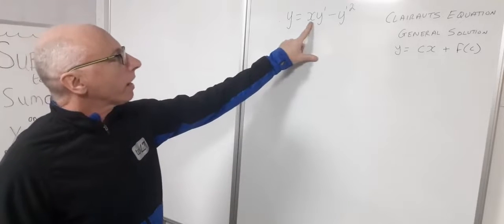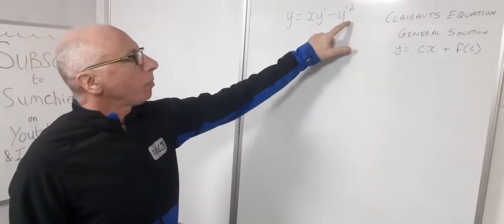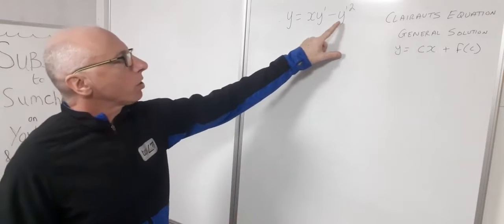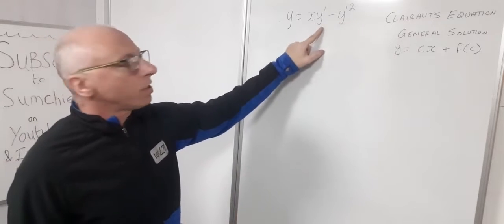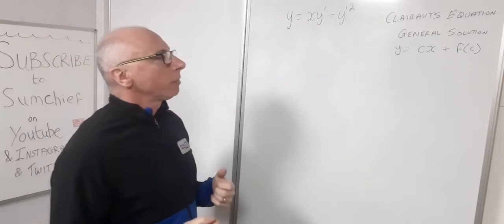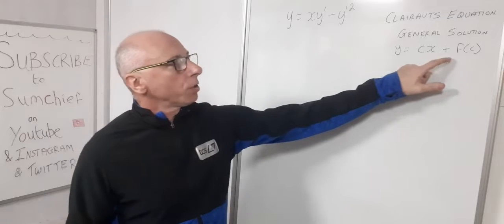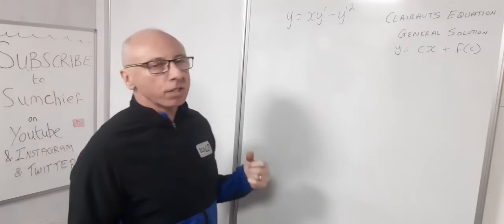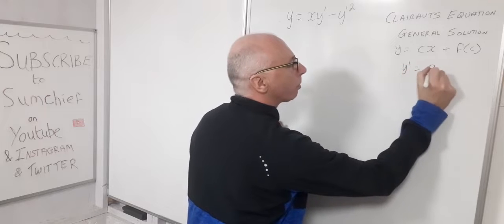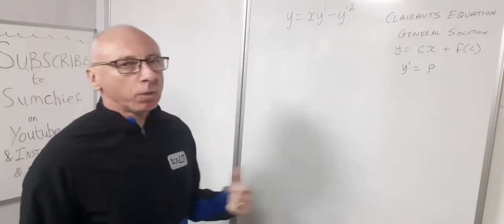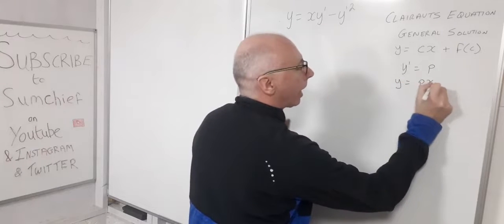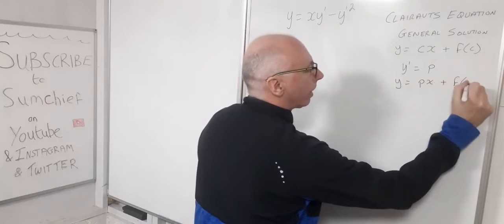So here we've got xy prime minus y prime squared. Here our f of c will be minus y prime squared, where we use our c to be y prime and what we do is we transform this solution in terms of p. So we set y prime to be p and that will give us y equals px plus f of p.